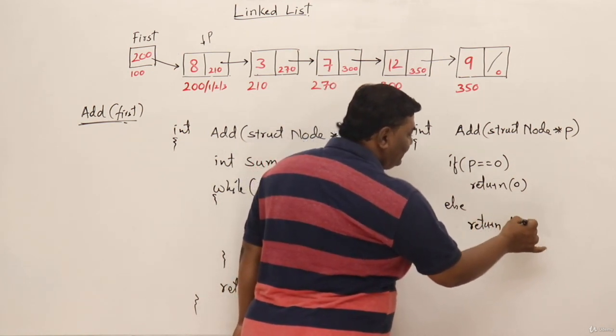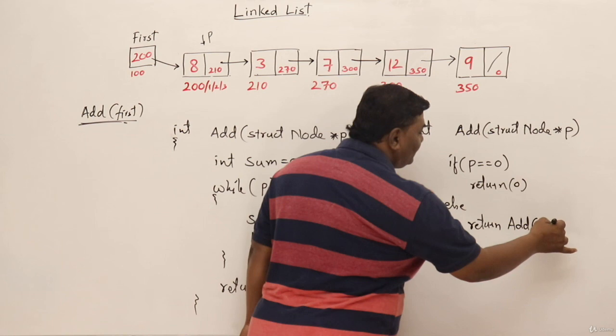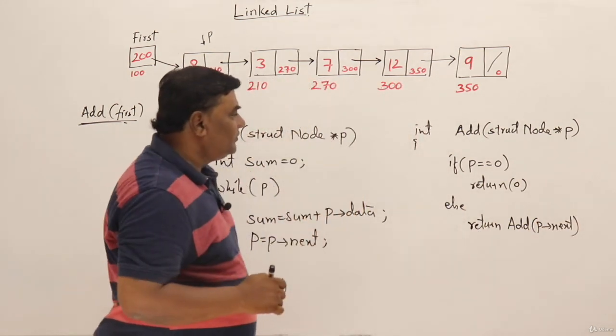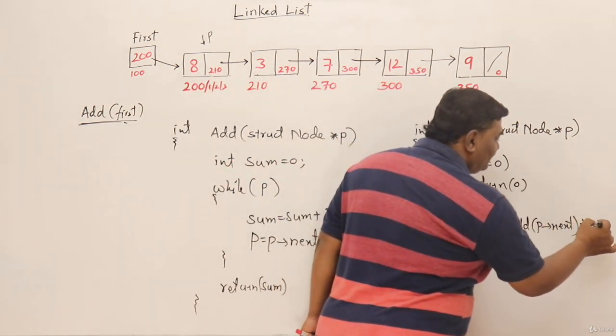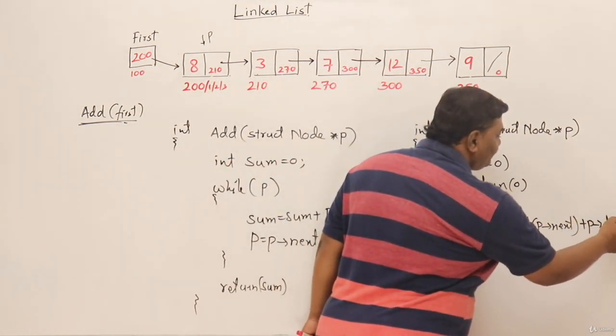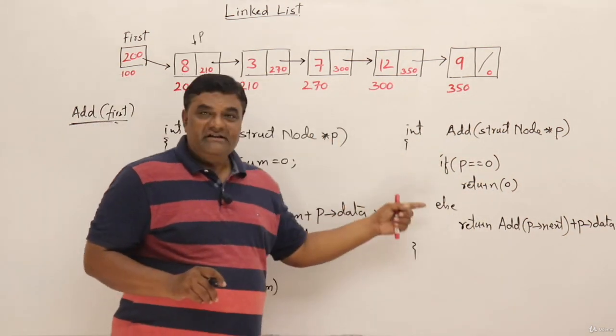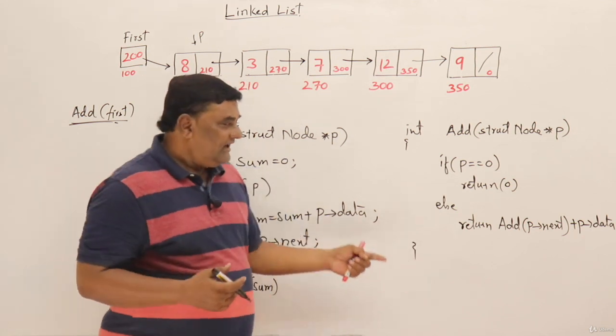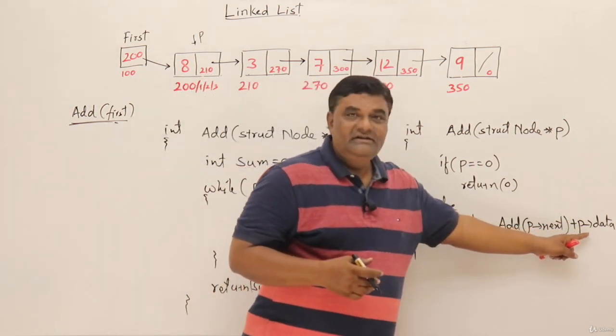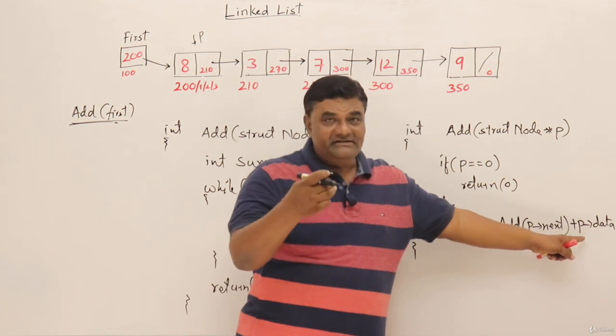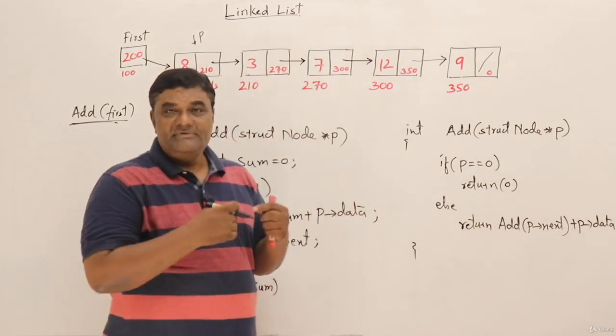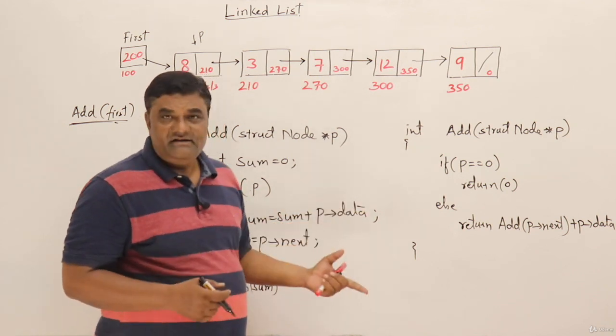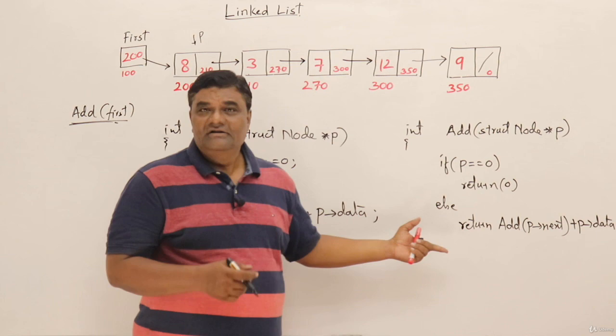Otherwise, else, return add function will call itself upon next node - so this is next node - plus the data of the current node, so plus P's data. This is a recursive function. It is similar to count function only, except instead of adding one here I'm adding P's data. So data of every node will be added. In the count function it was adding one every time, but here it is adding data.